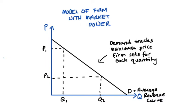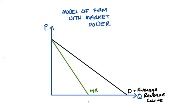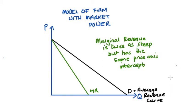The marginal revenue curve shows the additional revenue associated with producing one more unit as we increase our quantity. There are two things that will help you understand the shape of this curve. The first is that when our demand curve is a perfectly straight line, our marginal revenue will always be twice as steep, but have exactly the same price axis intercept as our demand curve.